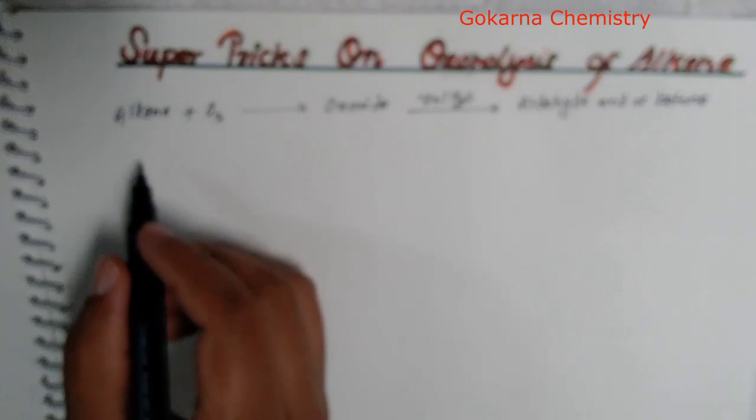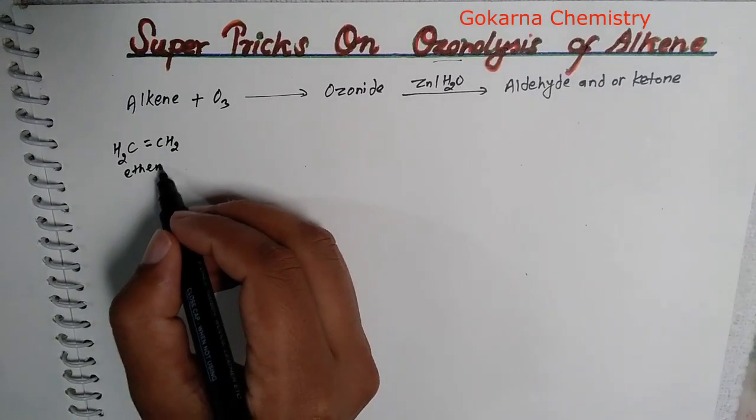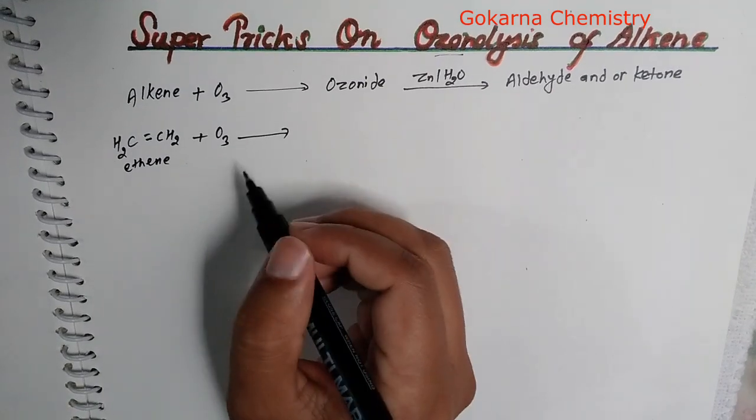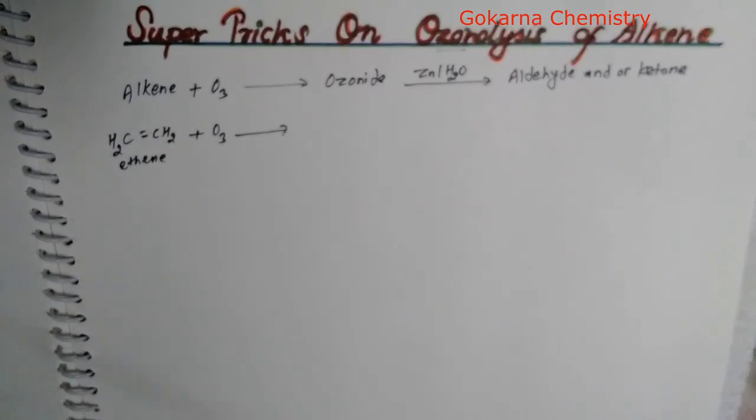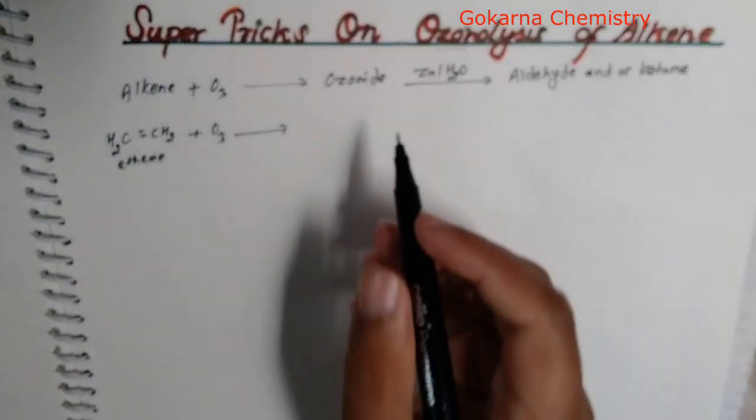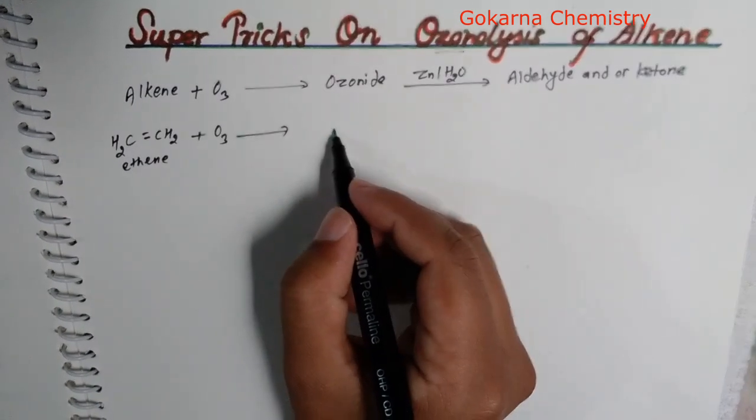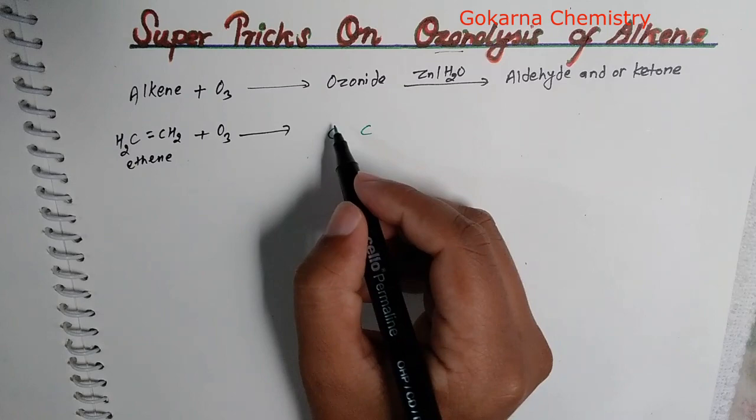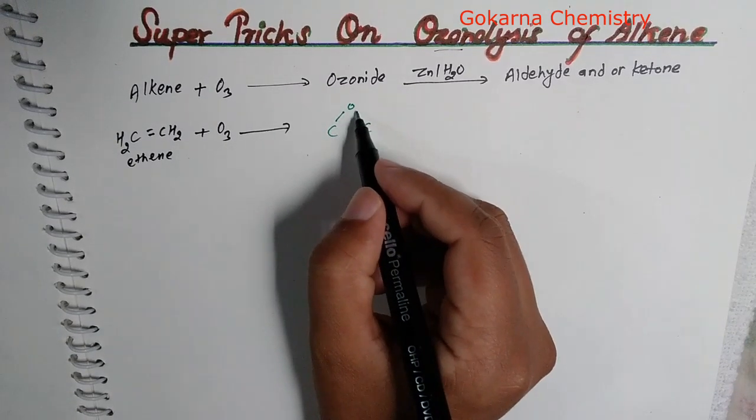Let us take an example of alkene: CH2 double bond CH2. When it reacts with O3, it forms ozonide. What is ozonide? Carbon is double bonded to carbon. This is the double bond. This carbon is bonded with ozone.